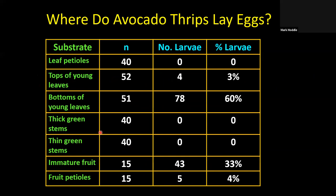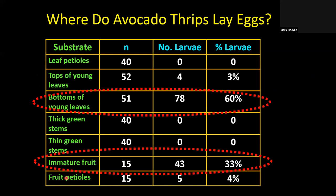Where else do they lay their eggs? We looked at leaf petioles, tops and bottoms of young leaves, thick and thin green stems, mature fruit, and fruit petioles. Avocado thrips really prefer two places: the bottoms of young leaves — the flush growth still that orangey-reddish or light green color before hardening off — and inside immature fruit. About 60% of thrips reared out came from the bottoms of young leaves and about 33% from immature fruit.